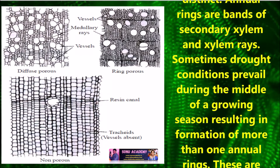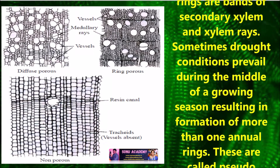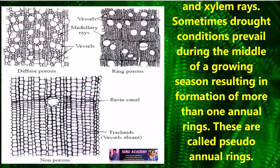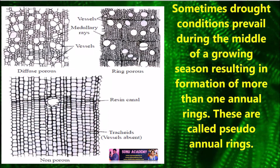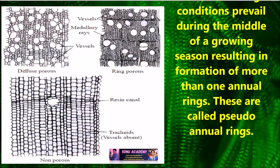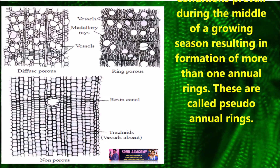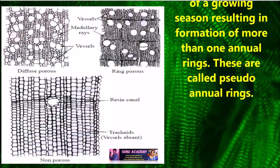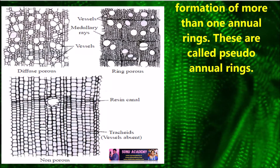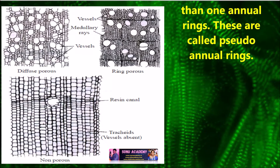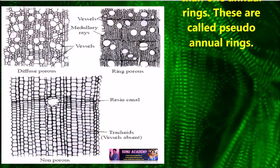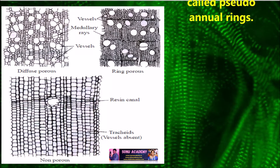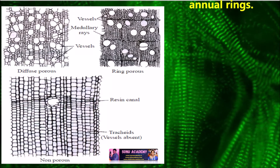Annual rings are bands of secondary xylem. Sometimes drought conditions prevail during the middle of the growing season, resulting in the formation of more than one annual ring. These are called pseudo annual rings.